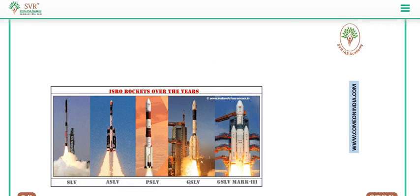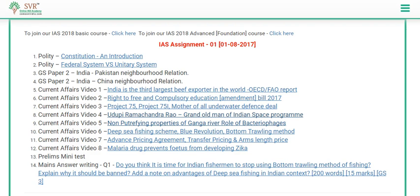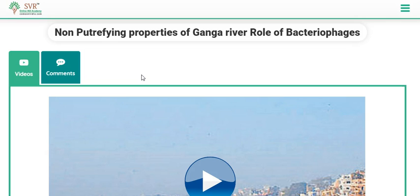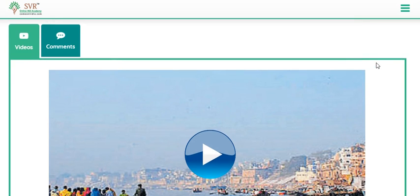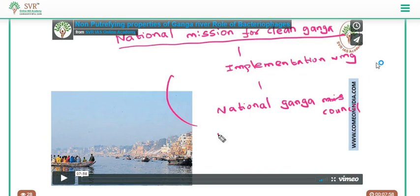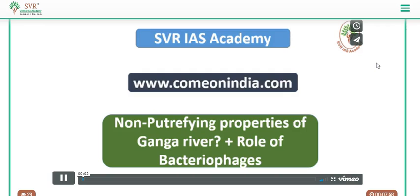The fifth video lecture is about the non-putrifying properties of the Ganga river and the role of bacteriophages. When organic matter is deposited in normal river water, bacteria decompose it and eutrophication occurs. But when organic matter is deposited in the Ganga river it does not decay — that is why it is called the non-putrifying character of the Ganga river.